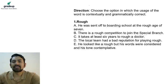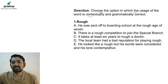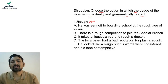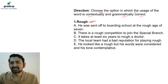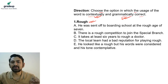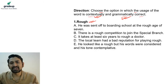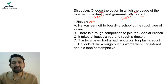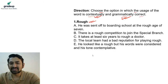Now, the directions are: choose the option in which the usage of the word is contextually and grammatically correct. There are five sentences — one in each option. You have to read each sentence and identify if it is both contextually and grammatically correct. Grammatically means according to grammar rules; contextually means whether the sentence makes complete and proper sense. Give me your answers in the chat box.